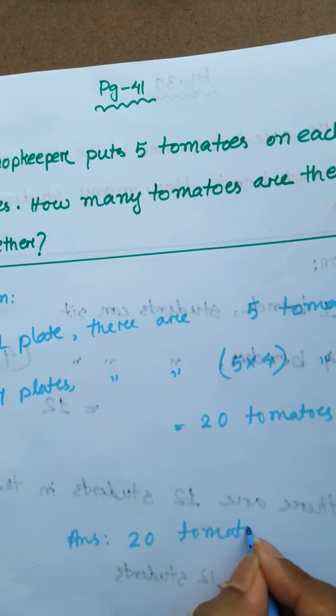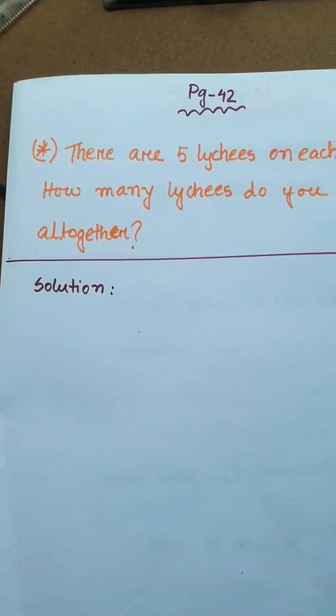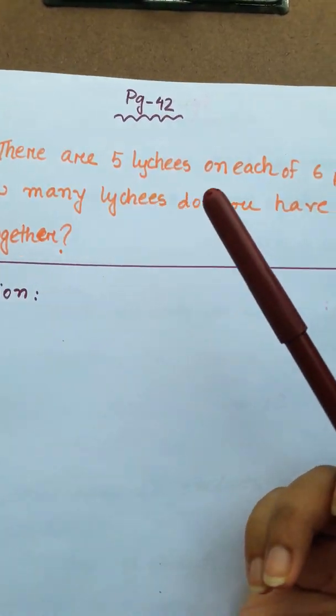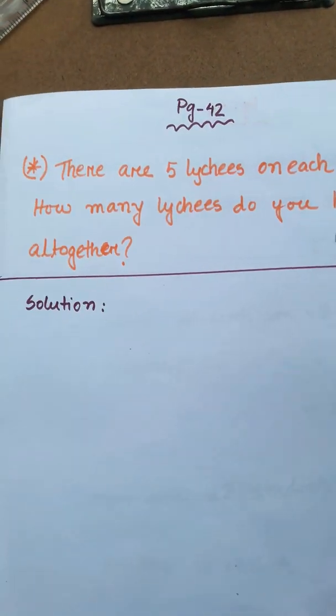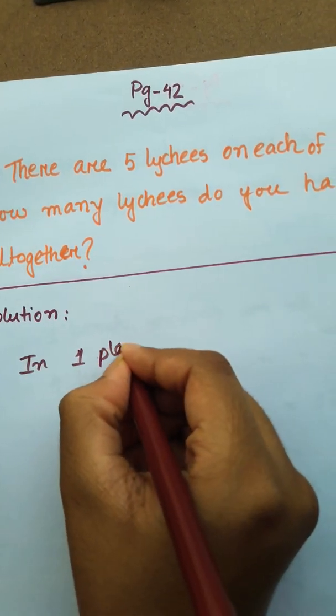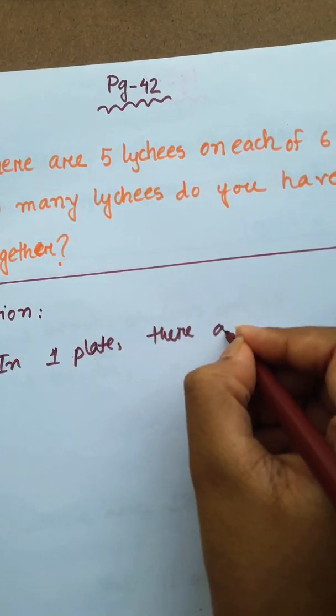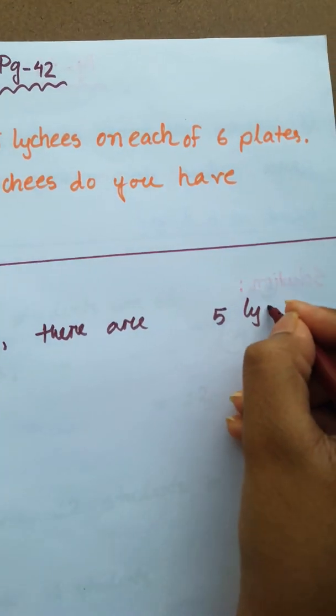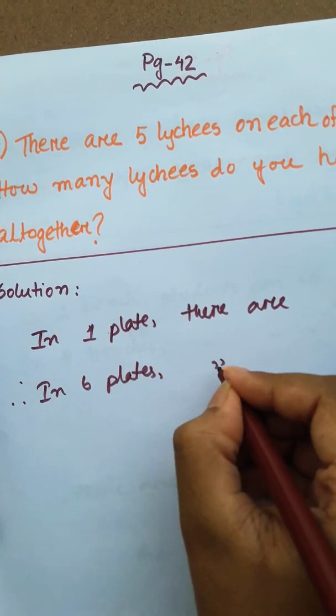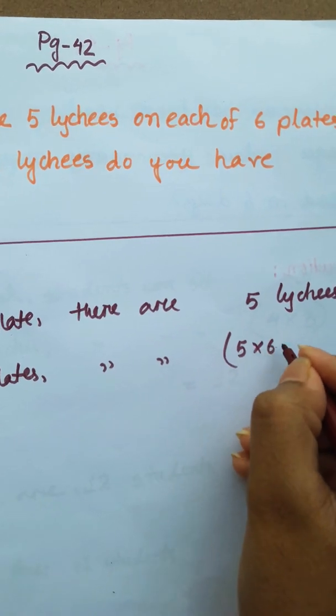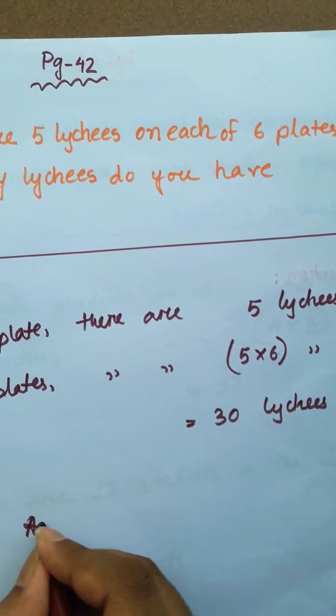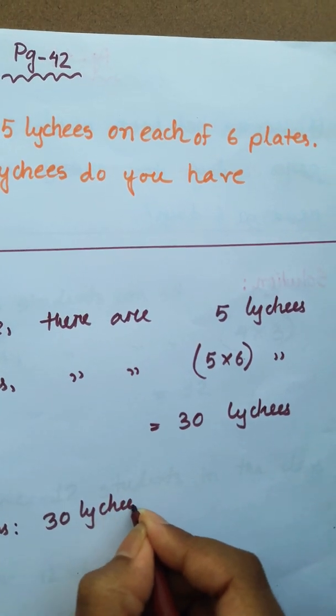There are 5 leeches on 6 plates. How many leeches do you have all together? In one plate there are 5 leeches. Therefore in 6 plates there are 5 into 6 leeches, 30 leeches. So the answer is 30 leeches.